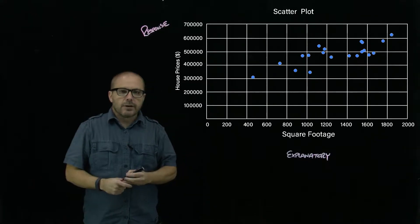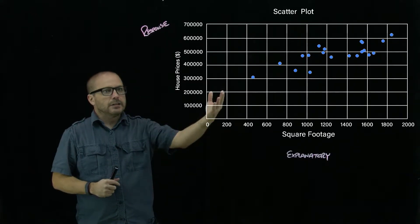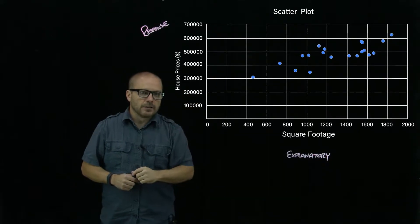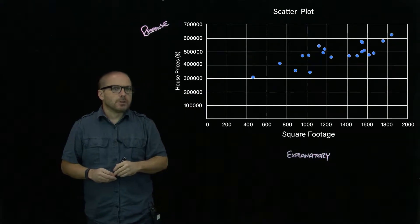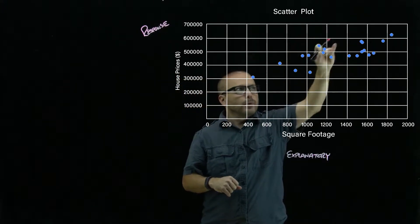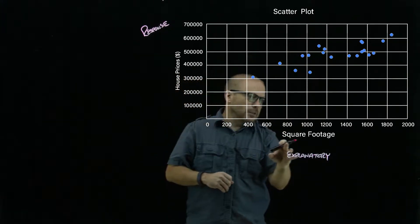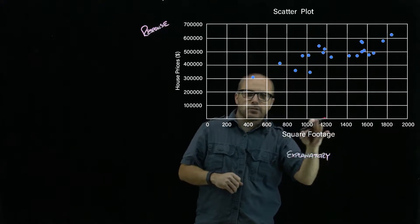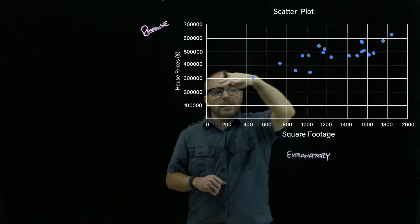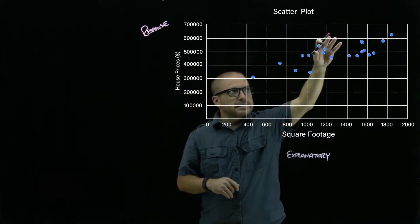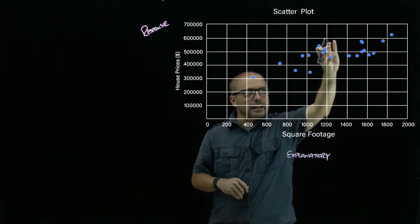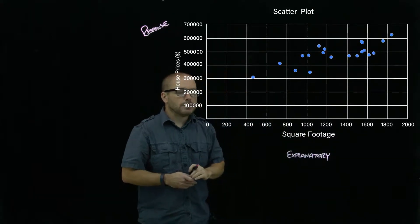When you look at that scatter plot, the very first thing we do is just see if there appears to be some sort of connection. When you look at that data, it is trending upward—as we get to larger and larger square footage, we seem to be going up and up in house price.